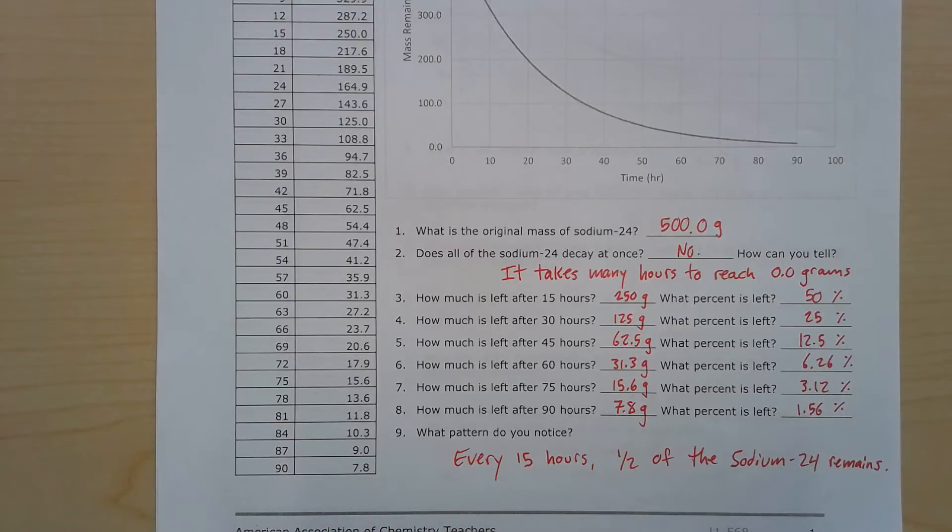Number three, actually number three through eight are all very similar. If you look over at the table, you can see that the time in hours matches up with the grams for the mass remaining. So let's just list these off. After 15 hours, 250 grams is left, which is 50%. After 30 hours, 125 grams, which is 25% is remaining.